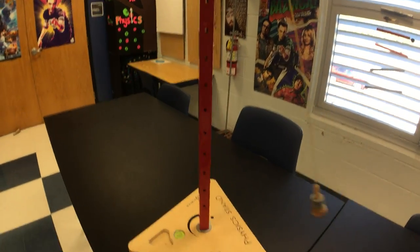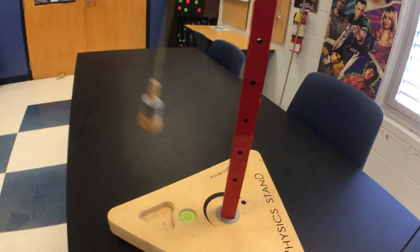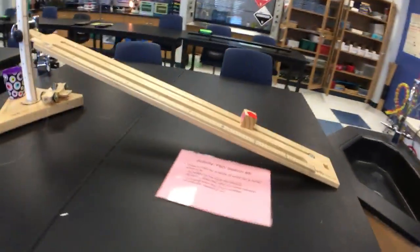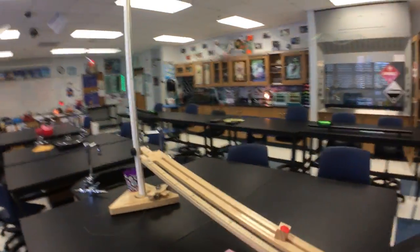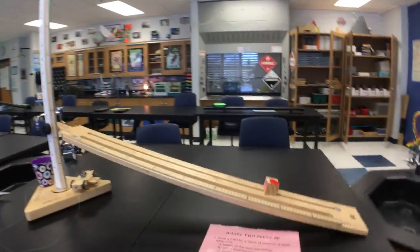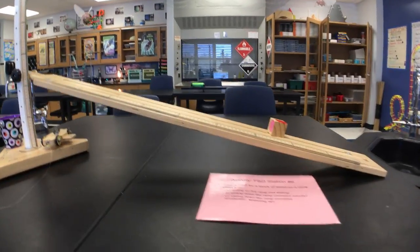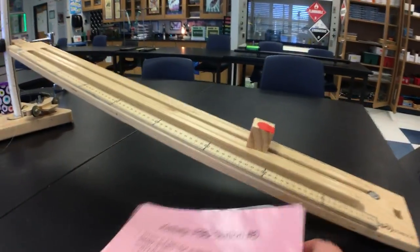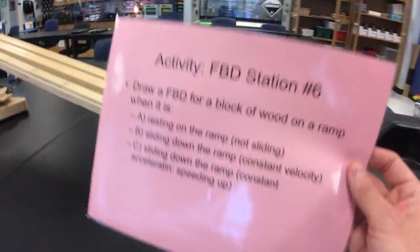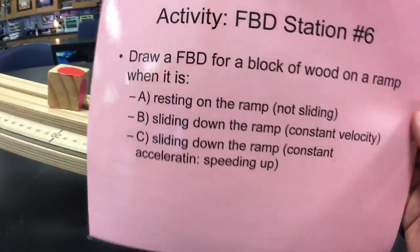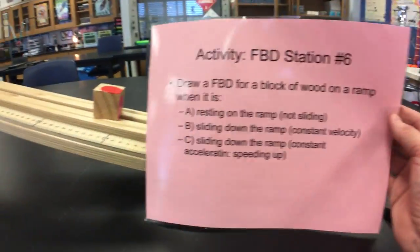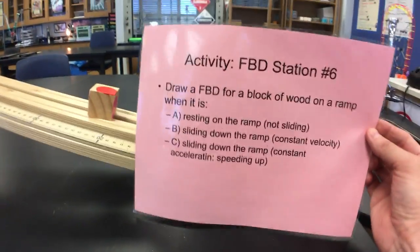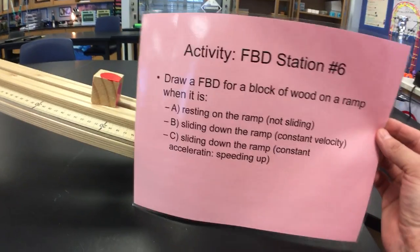This is called a pendulum and that is called a bob. Let's look at another station over here — station number six. We have a wooden ramp and a wooden block sitting on the ramp.